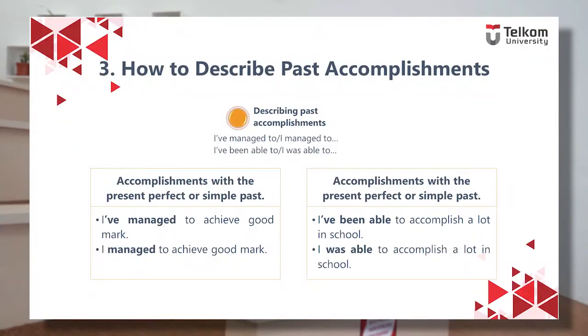Now let's learn how to describe past accomplishments. The learning objectives are: students are able to use various verb tenses in a conversation about goals. When describing past accomplishments, example phrases include: 'I've managed to' or 'I managed to', and 'I've been able to' or 'I was able to'.